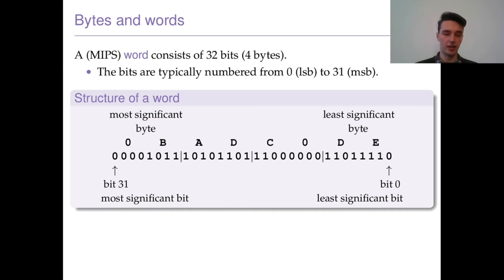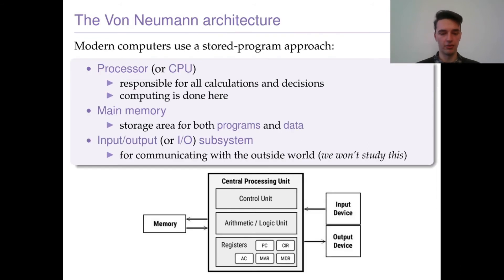While it's useful for telling us whether a number is odd, it doesn't convey as much information as bit 31, which is going to have a much larger impact. So a word: 32 bits, eight hexadecimal numbers. That's going to be a key idea going forward.